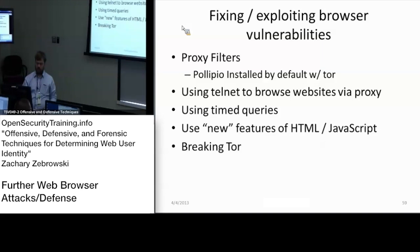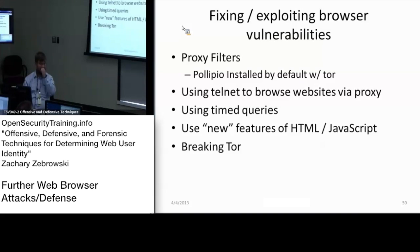We can also use time queries, which would basically defeat the timezone analysis that could be performed. We could also use new HTML features to exploit where a user is located or similar identifying characteristics. Of course, we can also break Tor itself. These are all ways of fixing or exploiting the browser vulnerabilities when talking about Tor.